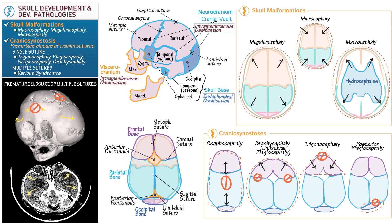Here we'll learn about skull development and its developmental anomalies. We'll address skull malformations, specifically macrocephaly, megalencephaly, and microcephaly. We'll also cover craniosynostosis, which refers to premature closure of the cranial sutures, dividing into disorders of a single suture — including trigonocephaly, plagiocephaly, scaphocephaly, and brachycephaly — as well as disorders that involve multiple sutures, or synostosis.